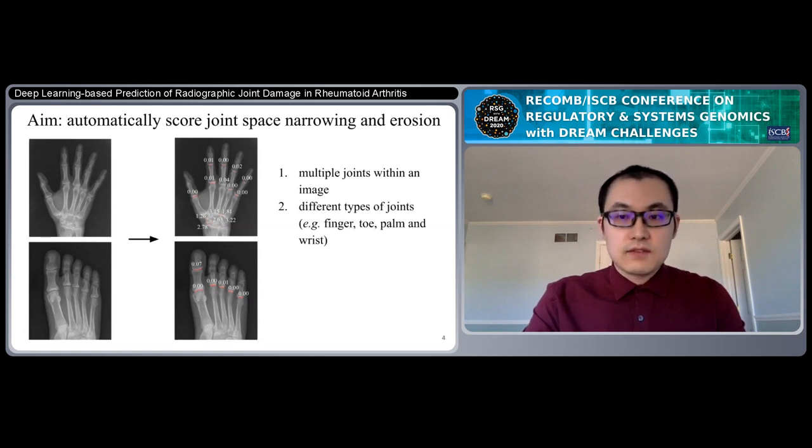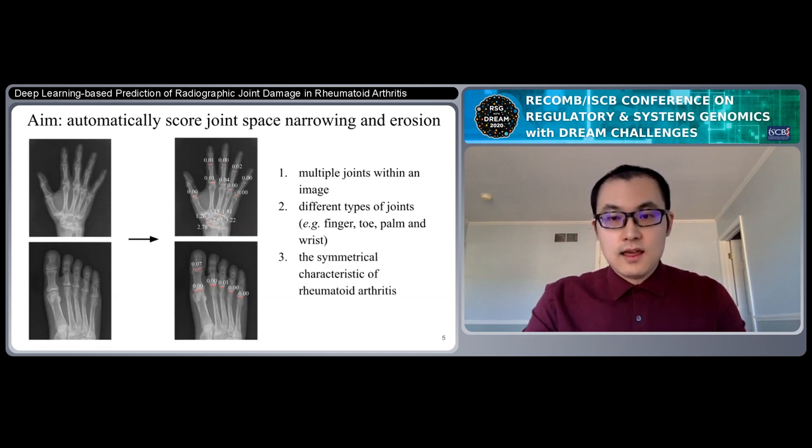Second, there are different types of joints, usually in different orientations. So the model needs to be robust to accept all different conditions and make the correct predictions. Third, patients with rheumatoid arthritis usually have symmetric damage in their both left hand and right hand. So this type of information needs to be considered to achieve better performance.